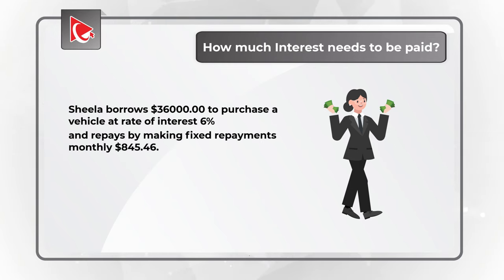The principal amount borrowed here is $36,000. Time to repay is 4 years, which equals 48 months, meaning the number of payments is equal to 48. Monthly payment amount is $845.46. The first step is to calculate the total repayment amount, which would include principal and interest, by multiplying the fixed monthly payment by the number of payments. $845.46 multiplied by 48 equals $40,582.13.